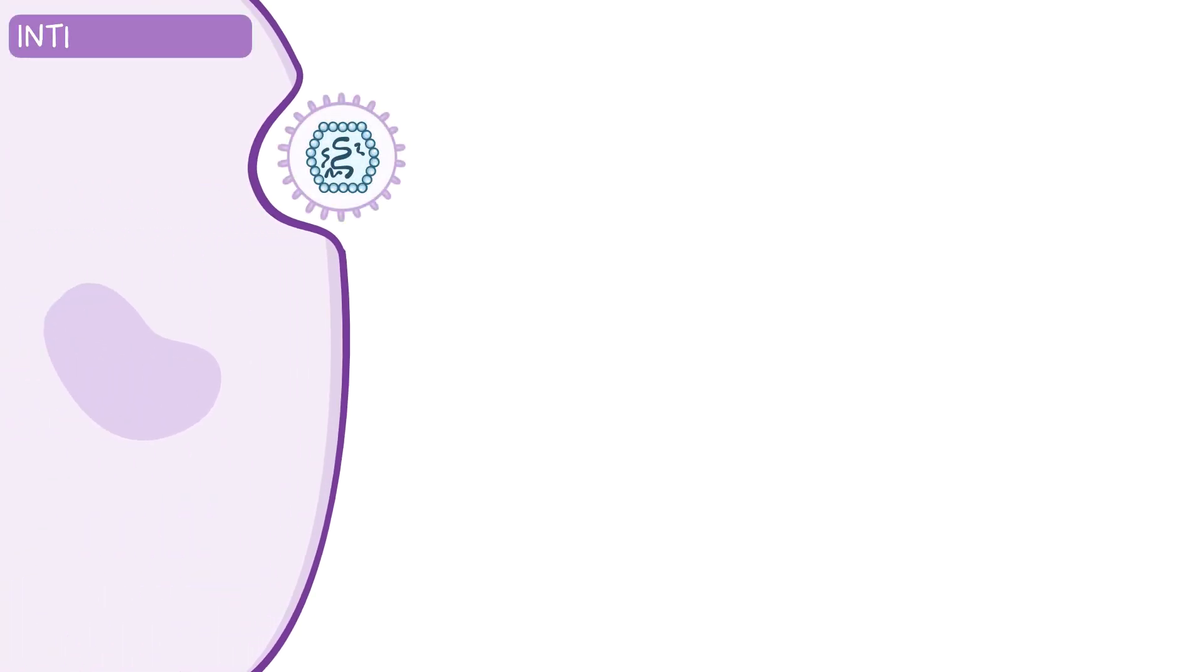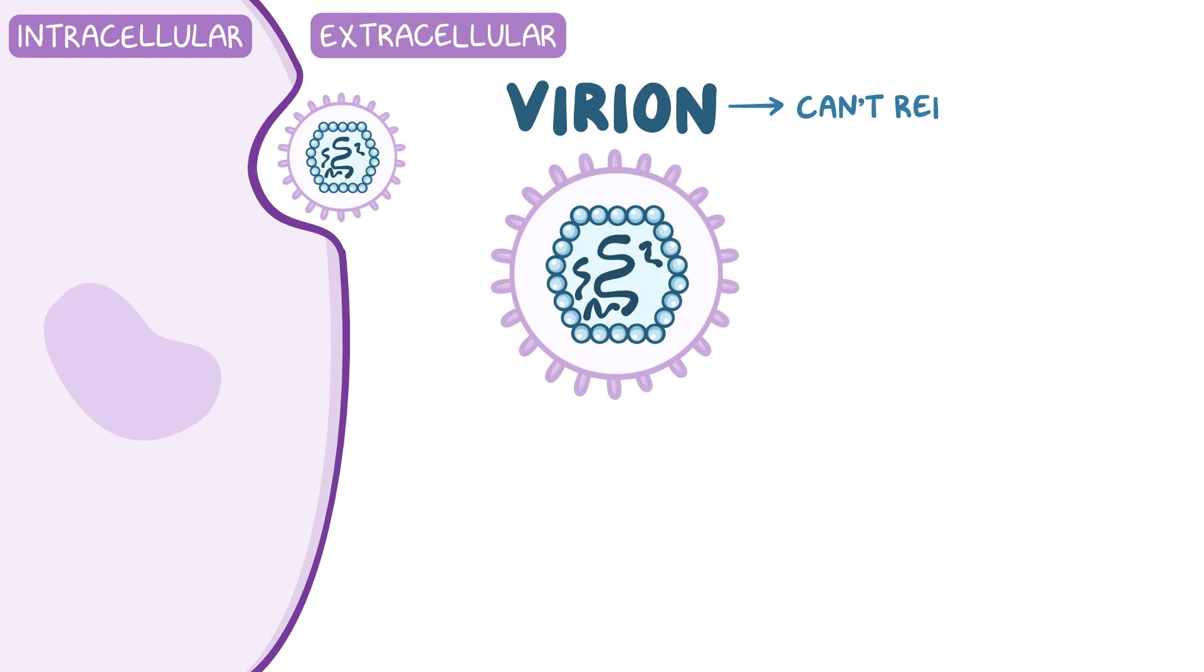Viruses can exist either extracellularly or intracellularly. In the extracellular state, the virus is called a virion and isn't capable of reproducing. A virion consists of a protein coat called a capsid, surrounding a nucleic acid core which contains the genetic material or the viral genome. The nucleic acid and the capsid are collectively called a nucleocapsid. Some virions have a phospholipid membrane derived from the host cell called an envelope, which surrounds the nucleocapsid.